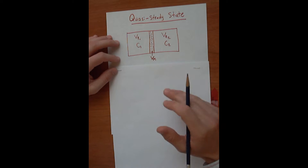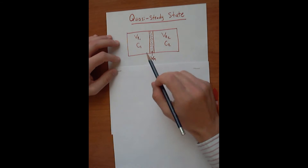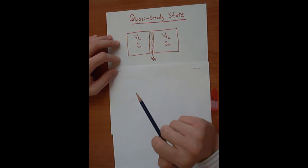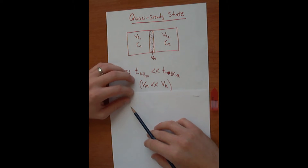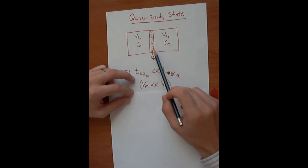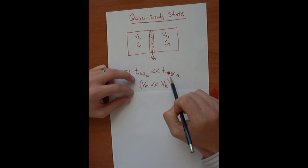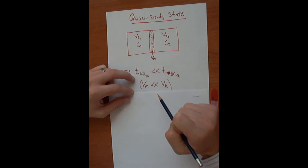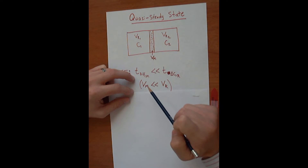So what makes this situation quasi-steady state for diffusion through this membrane? We can do a test: if the time it takes for diffusion through the membrane is much less than the time it takes for the concentration to change in one of these reservoirs, then we can assume that diffusion through this membrane is a quasi-steady state situation.